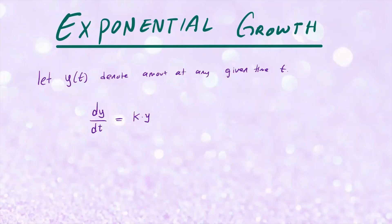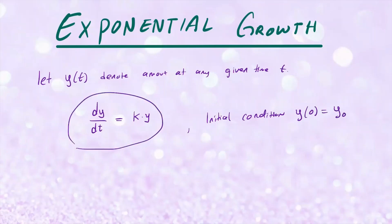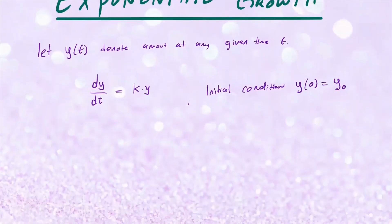So this is the differential equation we're going to be using, with the initial condition that the amount at t equals zero is going to be some y-naught. Let's go ahead and solve this differential equation using separation of variables, since this is a separable equation. I'm going to divide both sides by y and multiply dt on both sides, so you have 1/y dy equals k dt.